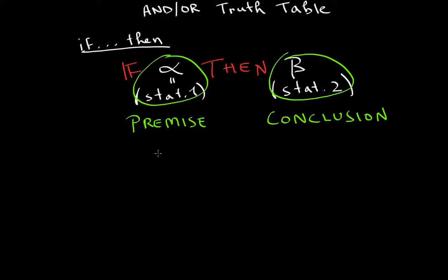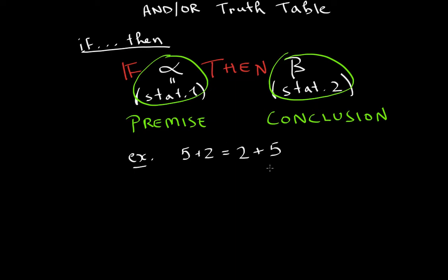It's not so much on commutativity, which is more of a linear algebra concept. However, we all know that — let me give you an example. So if we have five plus two, we know that's equal to two plus five. Any grade three student will be able to tell you this, that this is seven, and therefore this is seven — they are the same thing.